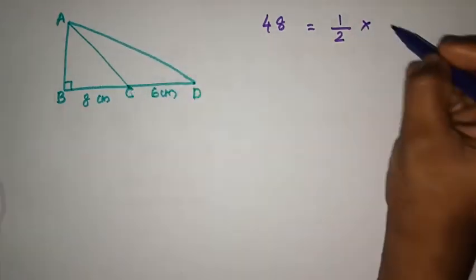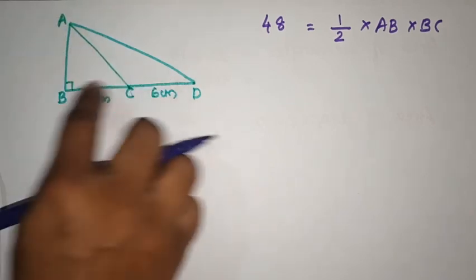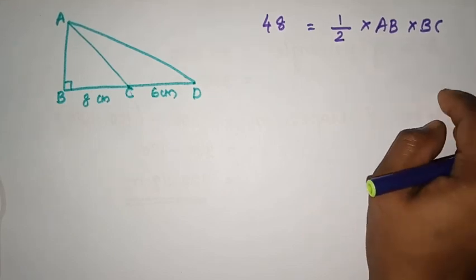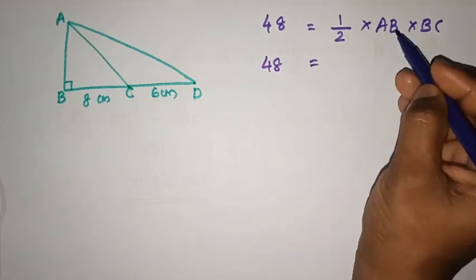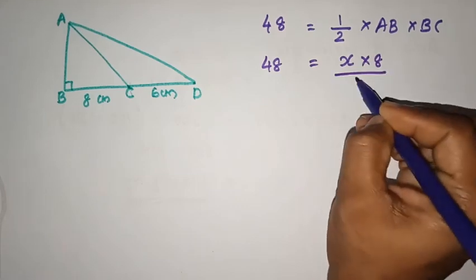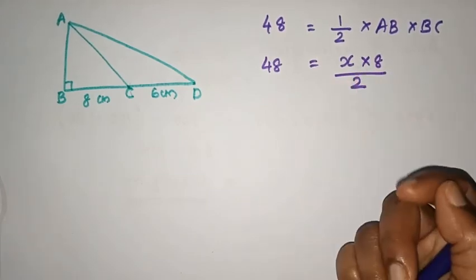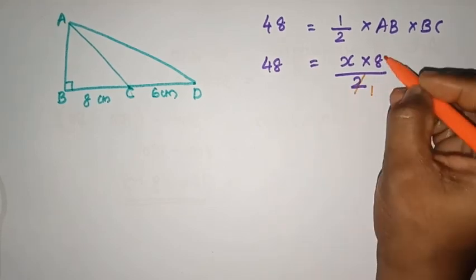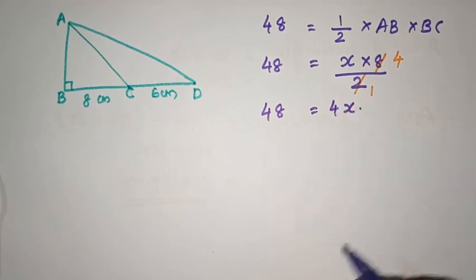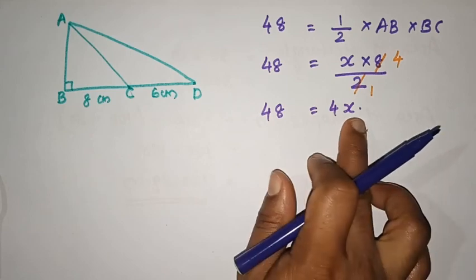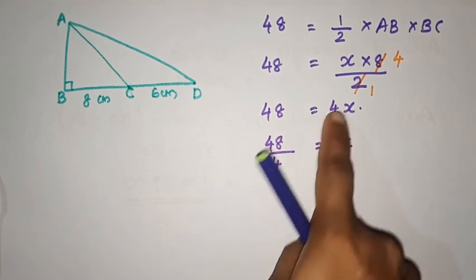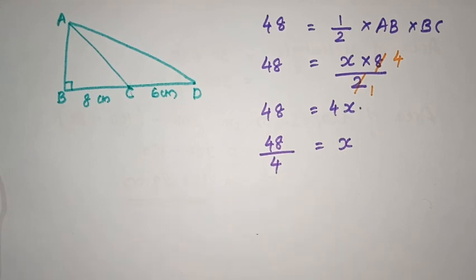We have the formula: half into AB into BC. You know this triangle ABC is a right triangle, so the area is AB into BC by 2. Now we check: 48 equals AB — we have x — into BC which is 8, divided by 2. We cancel: 2 into 1 and 2 into 4. So 48 is equal to 4x. Now we divide both sides by 4.